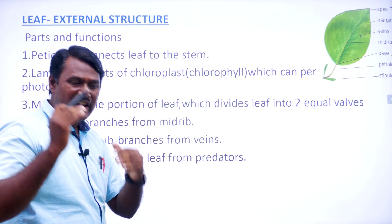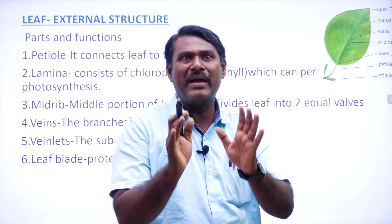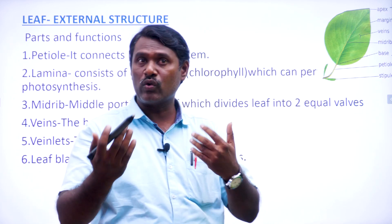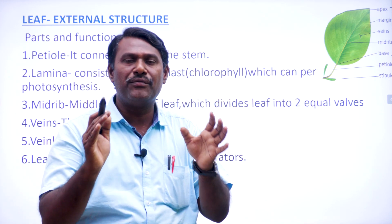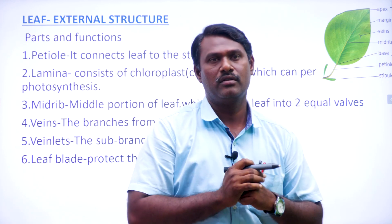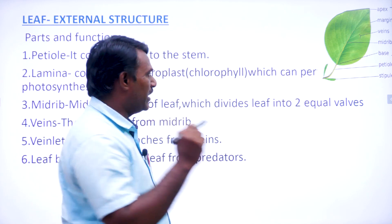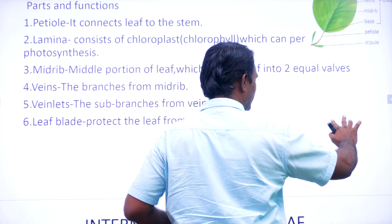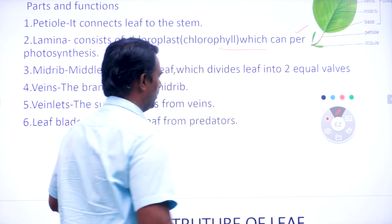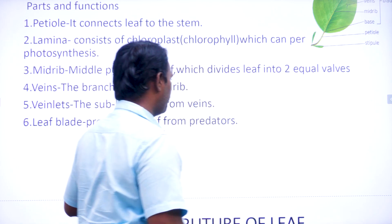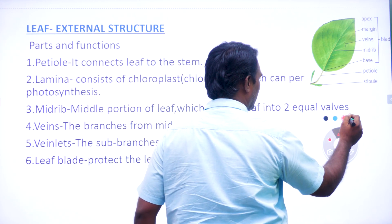Leaf is mainly involved in the photosynthesis process. You may ask why only the leaf is involved. Because the essential pigment required for photosynthesis is chlorophyll. This chlorophyll is present only in the leaf — it is not present anywhere else. That is why the leaf is mainly involved in photosynthesis.